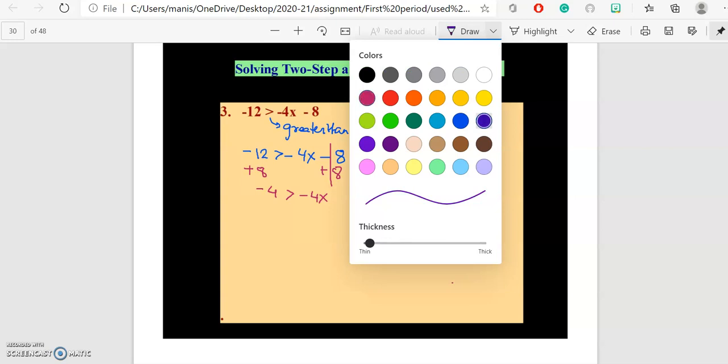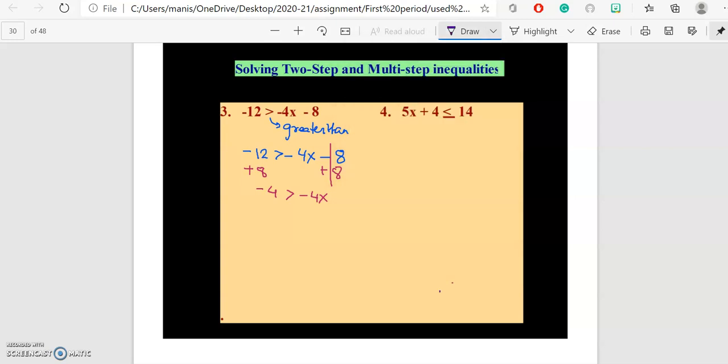Now this says negative 4 is greater than negative 4 times x. So what is the opposite of times? Division. Now when we are dividing by a negative number, this means we will be changing the direction of this inequality symbol.